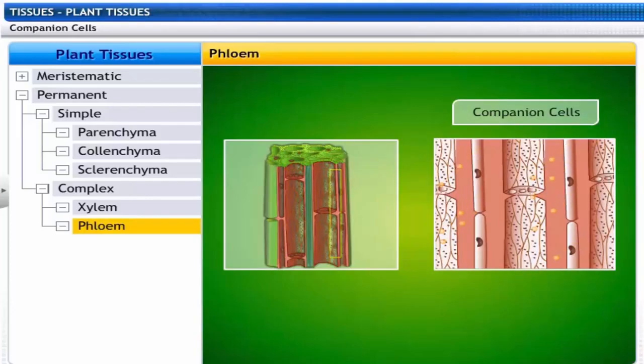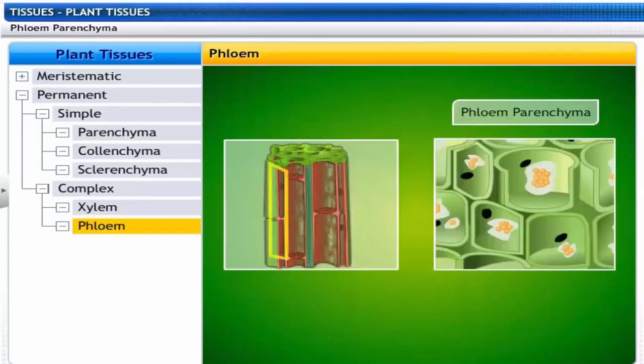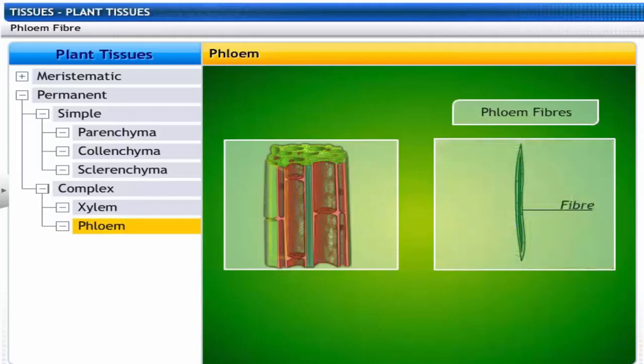They transport sugar or food from the leaves to the stem and the roots. Companion cells help in conduction of food to sieve tubes. Phloem parenchyma store food. Phloem fiber provides mechanical support.